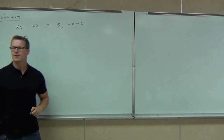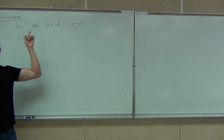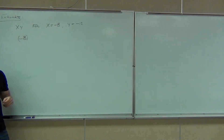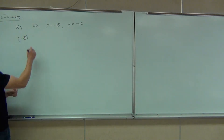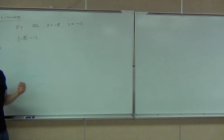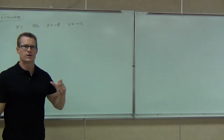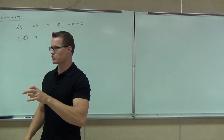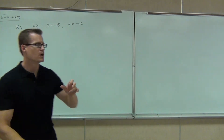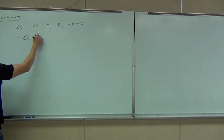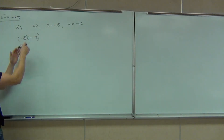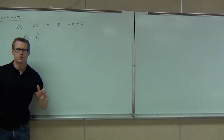That right there groups it and says my number is negative 8. Then it says y — what does xy mean again? X times y. Okay. What am I going to put next in place of y? Negative 12. This is even more important than that negative 8. I really want to make sure that says times negative 12 instead of minus 12. We don't want minus 12. So we're going to use those parentheses again. That right there says negative 8, or x, times y, or negative 12.